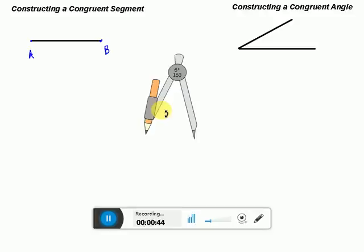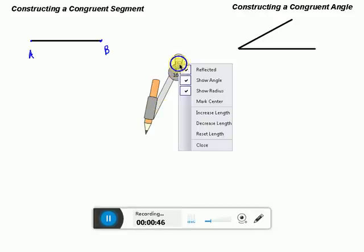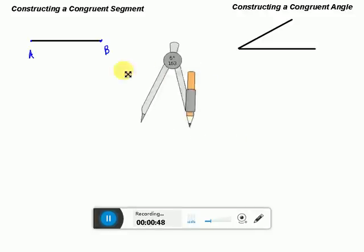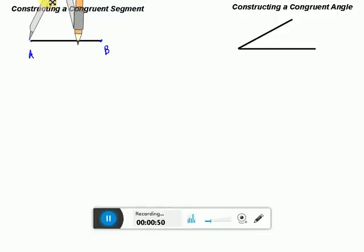So, I'm going to take my pivot point from my compass, and I'm going to put it at point A, and I'm going to open up my compass so that it has that length all the way out to point B.